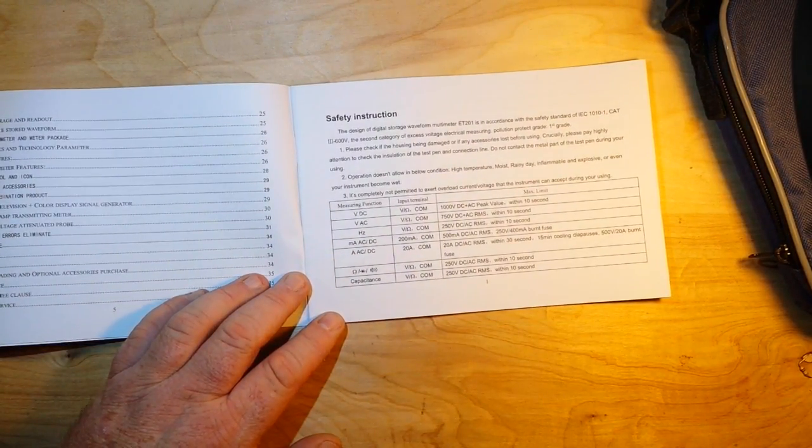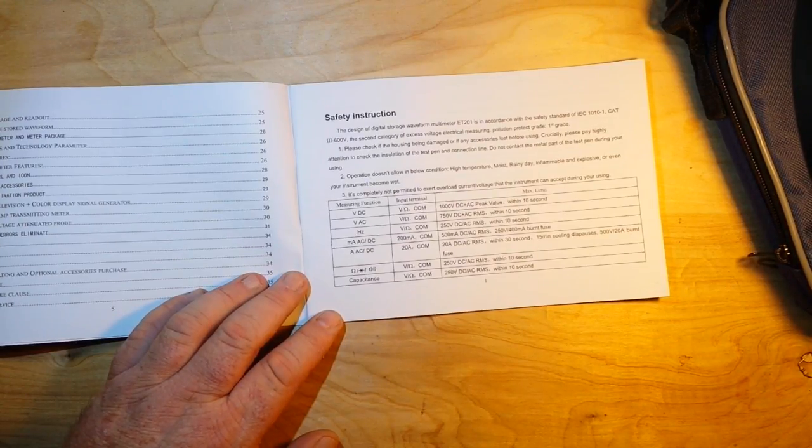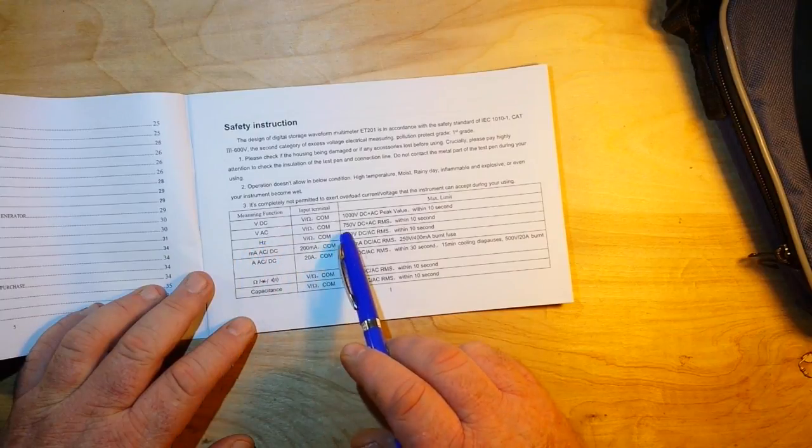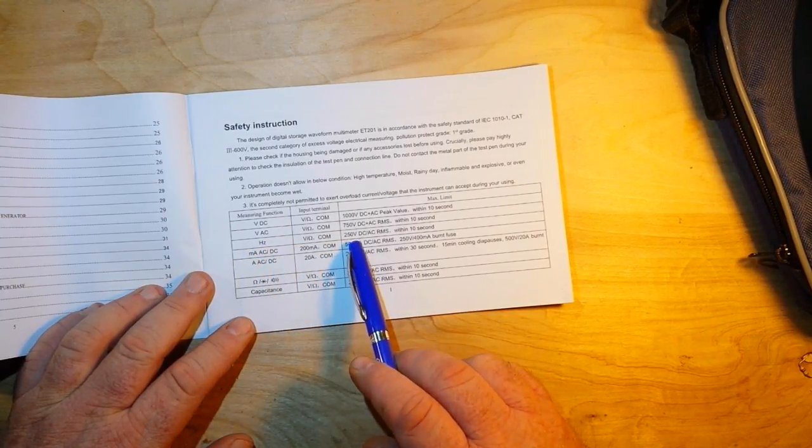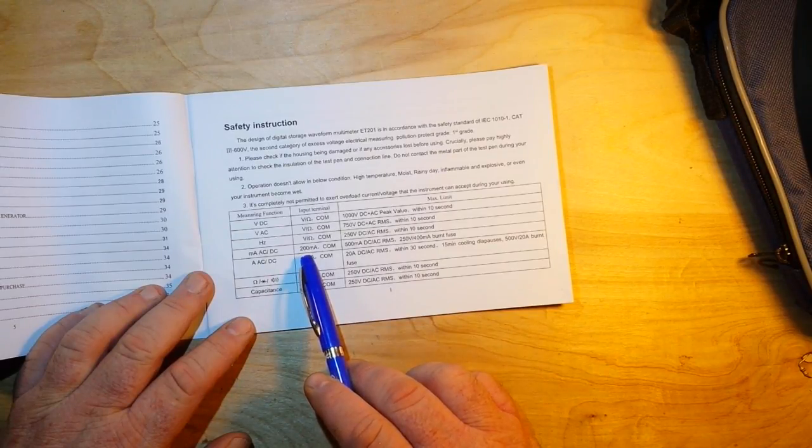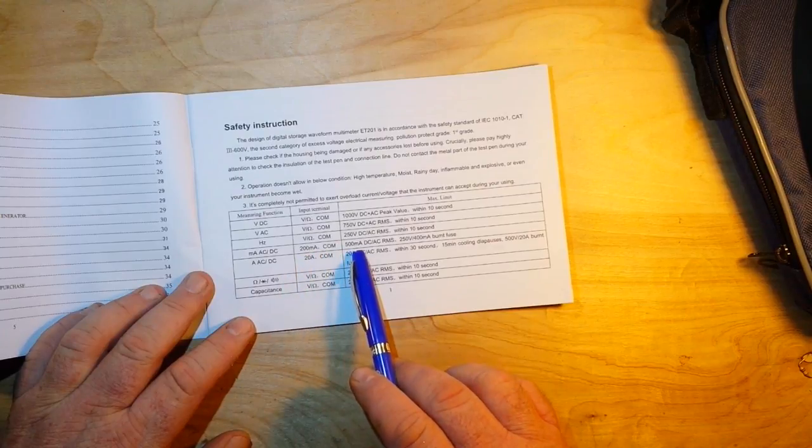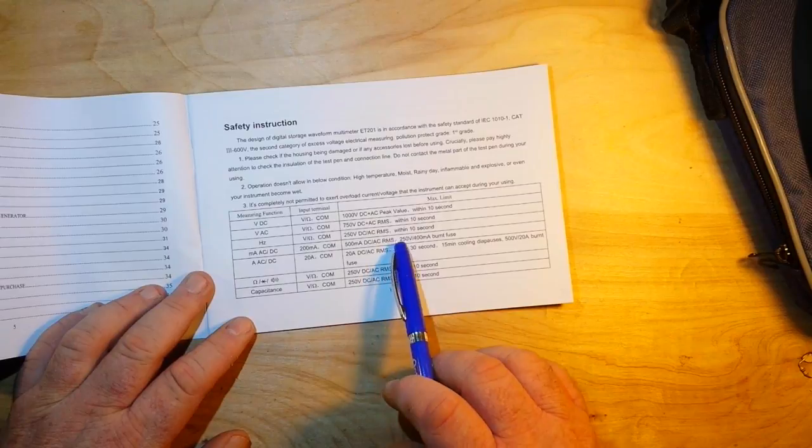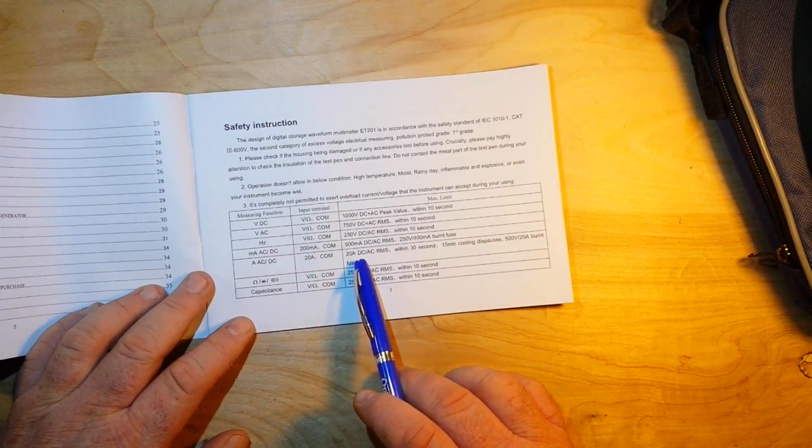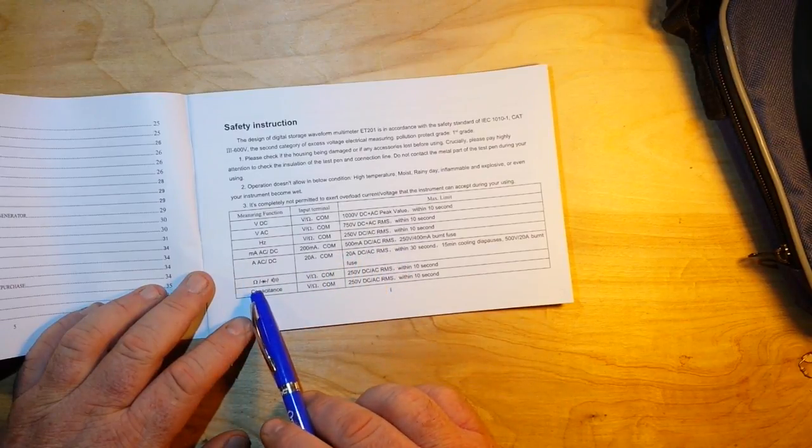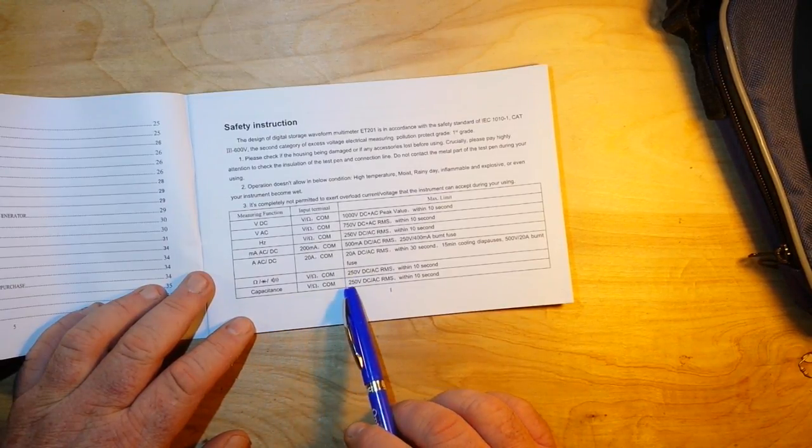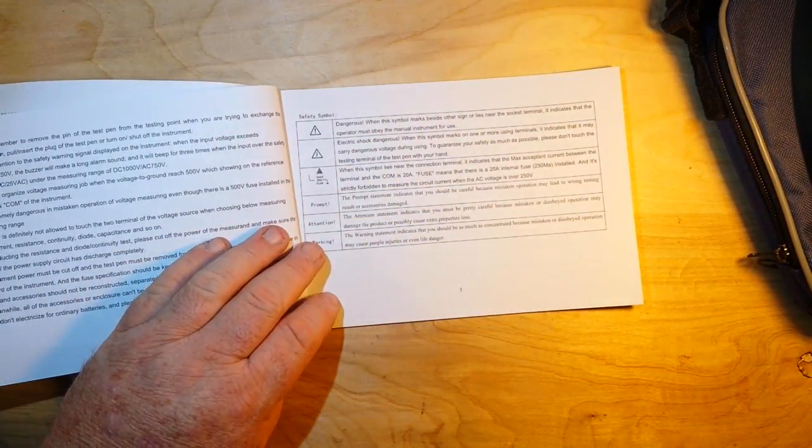Here are safety instructions and limits. Maximum voltage DC 1000 volts, AC 750 RMS. Hertz 250 volts. AC/DC 200 milliamps at the input terminal, 500 milliamps DC RMS, 250 volt 400 milliamp burnt fuse. Amps AC/DC 20 amp at the input, 20 amp AC DC RMS for 30 seconds. Resistance, diode continuity, 250 volt AC DC RMS. Capacitance 250 volt DC RMS. I know that doesn't make much sense to me either.